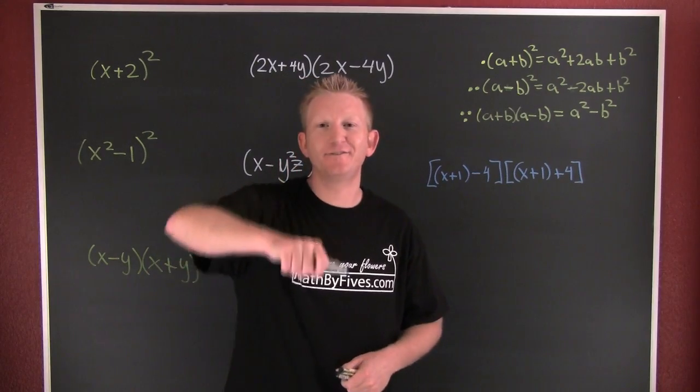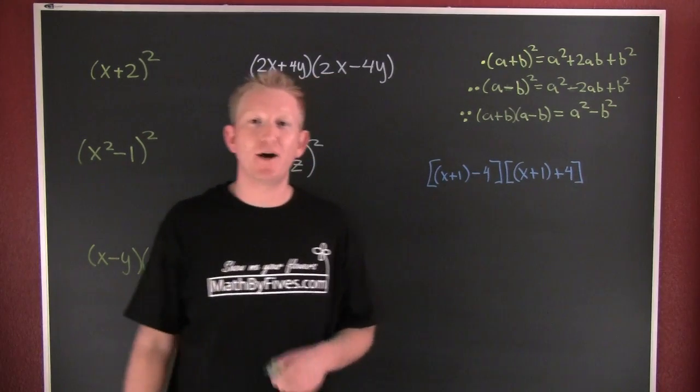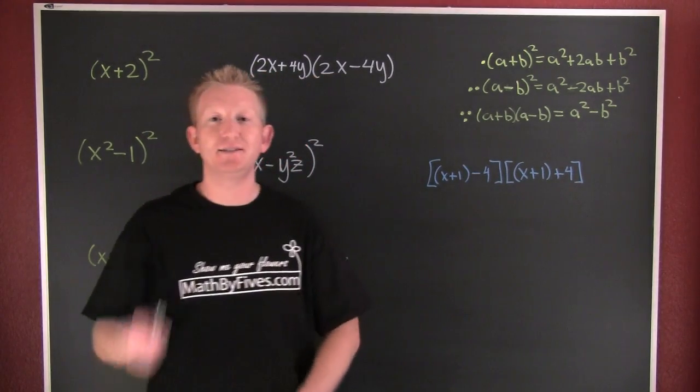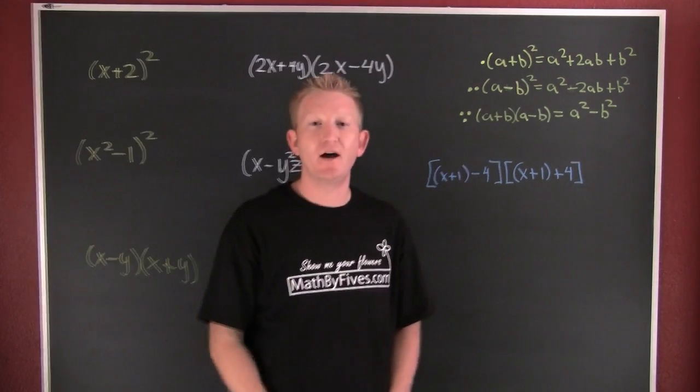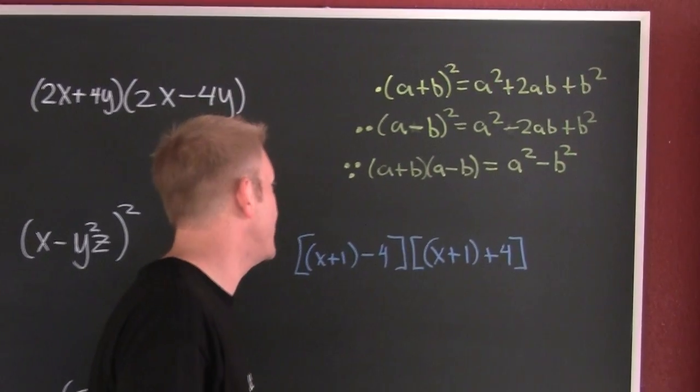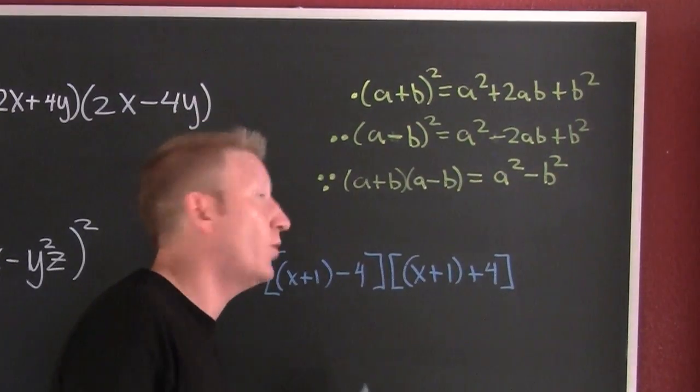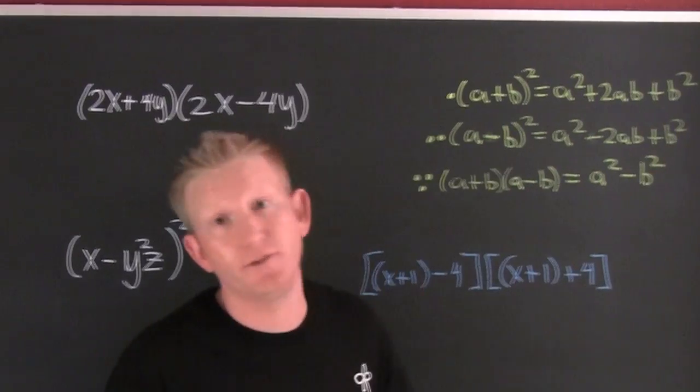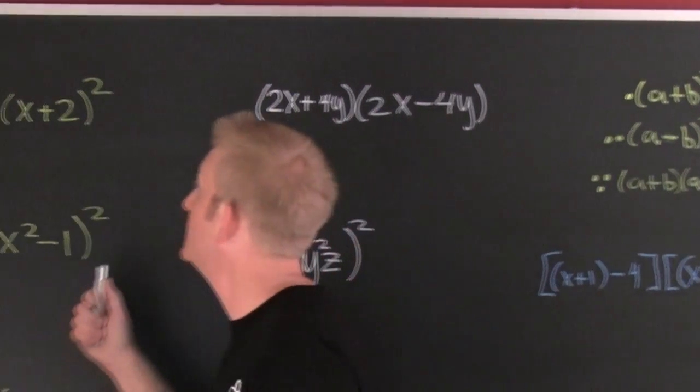We're multiplying stuff out using special products, quick and easy. We need to identify our forms. Why don't we start with a few examples.